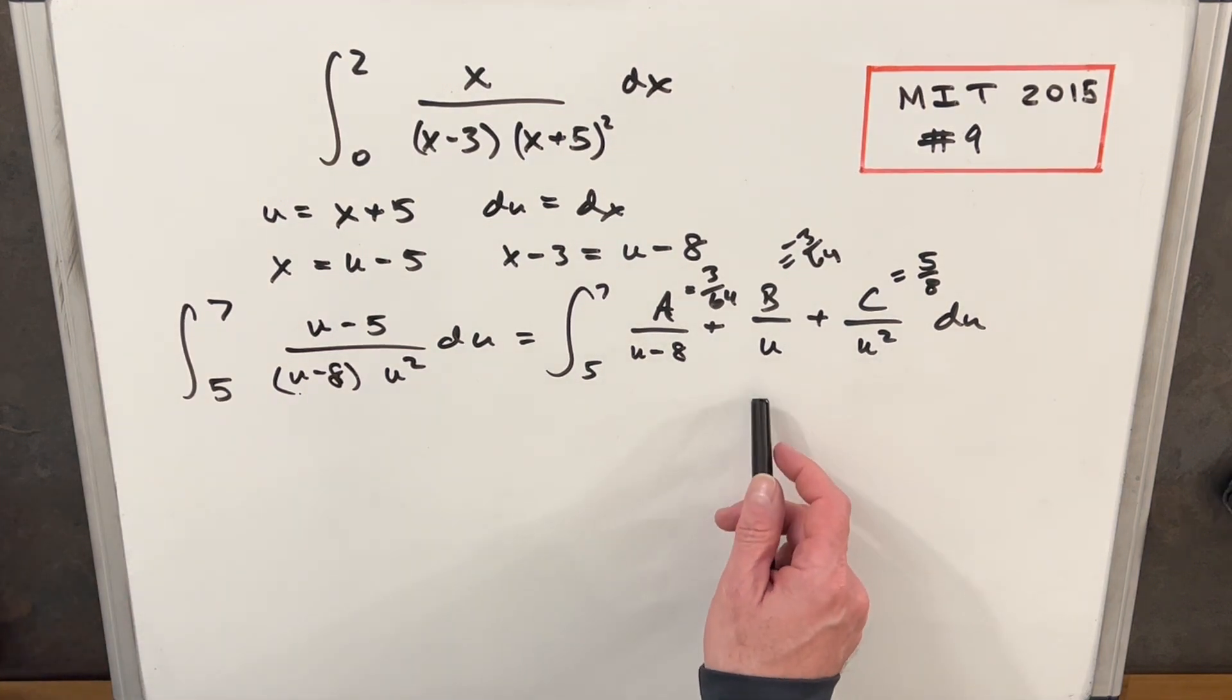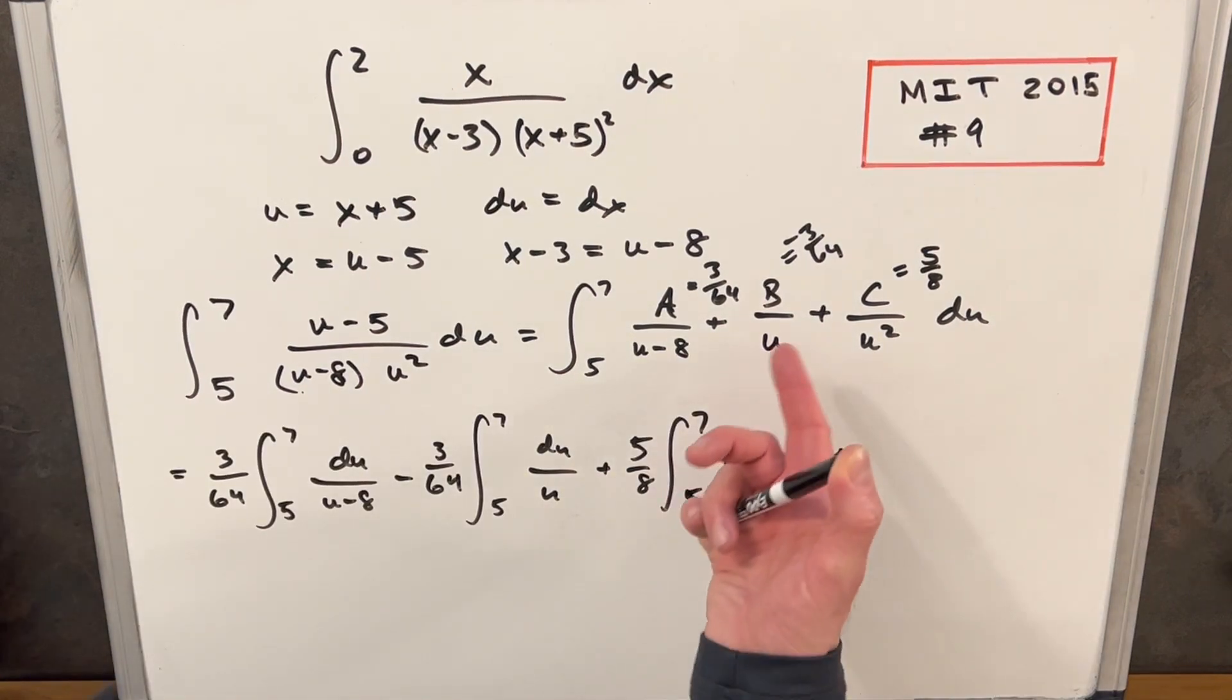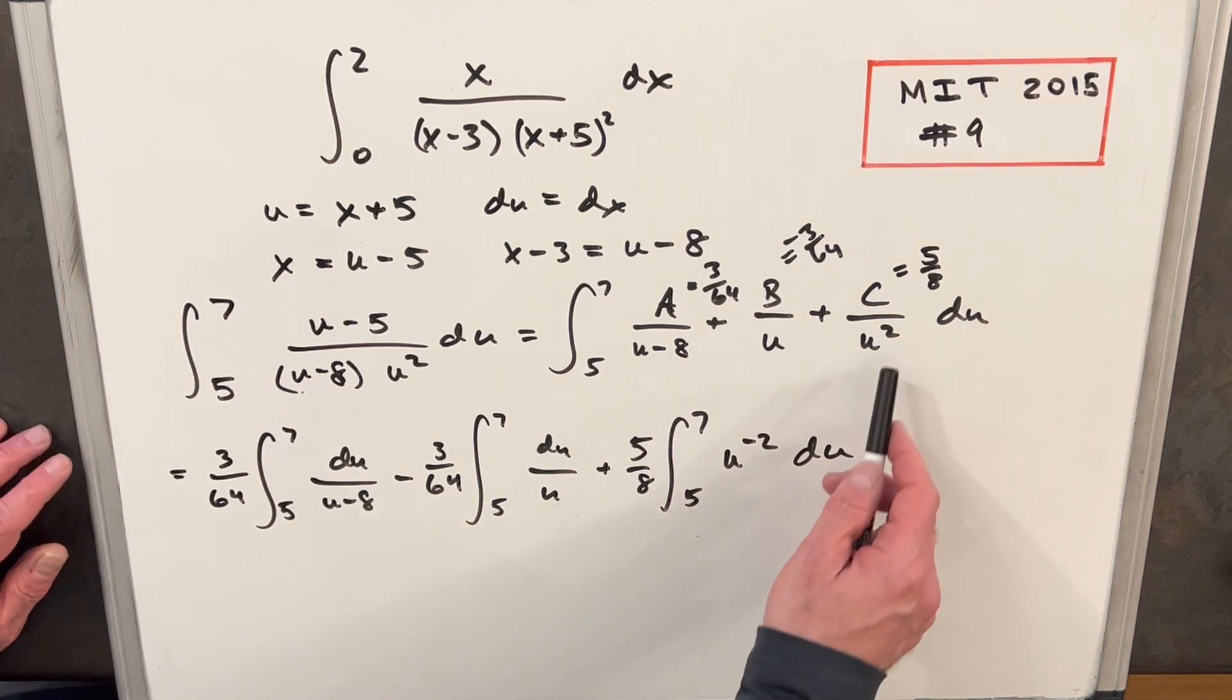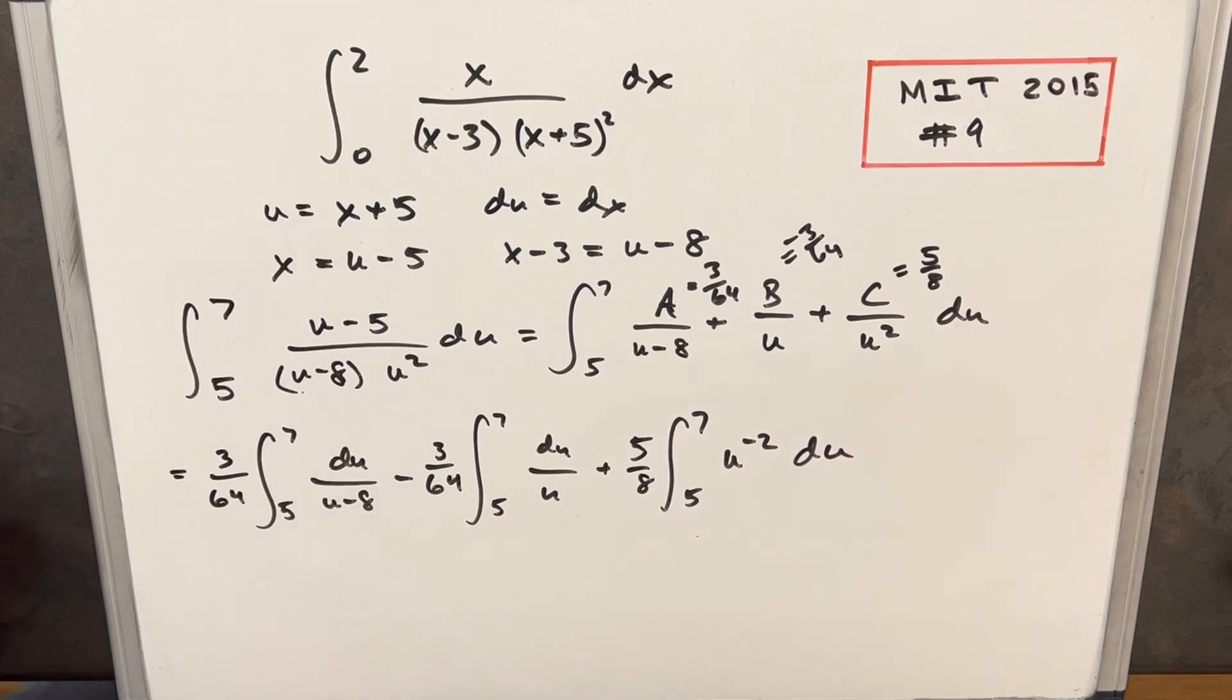And now with this, we're ready to integrate. We've got three easy integrals. I'm just going to rewrite this, just to clean it up a little bit. Okay, now with the rewrite, all I did was take my A, B, and C values, brought it outside of the integral, because those are all constants. I rewrote this u squared, and the denominator is u to the minus two. And so now we can integrate this thing.